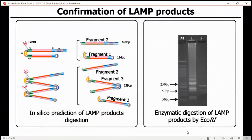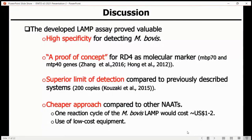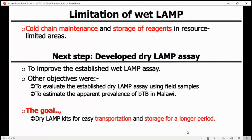We confirmed the LAMP products using enzymatic digestion and also in silico prediction. This LAMP assay that we developed proved valuable with high specificity for the detection of Mycobacterium bovis, and also served as a proof of concept for the use of Rd4 as a molecular marker. It has a superior limit of detection and a cheaper approach compared to other diagnostic methods — approximately one to two dollars — and also uses low-cost equipment. However, we have a limitation with LAMP because we still need cold-chain maintenance and storage of reagents such as the enzymes.